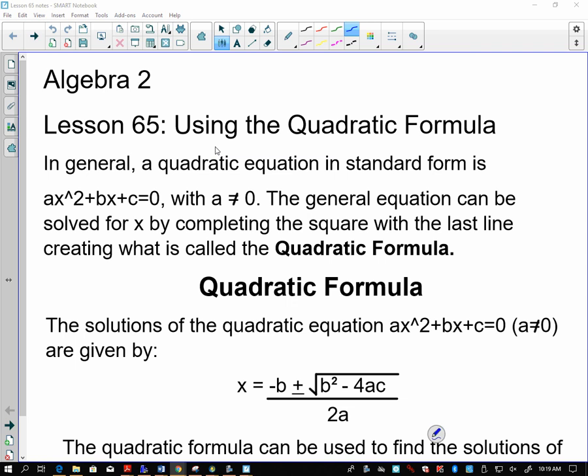In general, a quadratic equation in standard form is ax² + bx + c = 0, with a ≠ 0. The general equation can be solved for x by completing the square with the last line, creating what is called the Quadratic Formula.